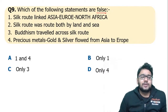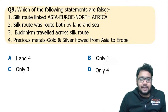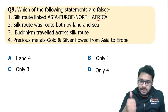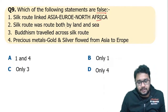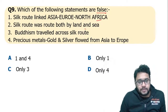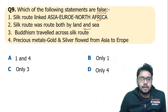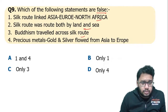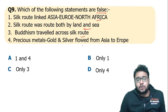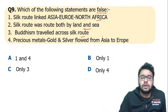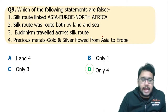The Silk Route linked Asia, Europe, and North Africa. It will definitely come — the Silk Route was a route both by land and sea. Buddhism traveled across the Silk Route, and precious metals — gold and silver — flowed from Asia to Europe.